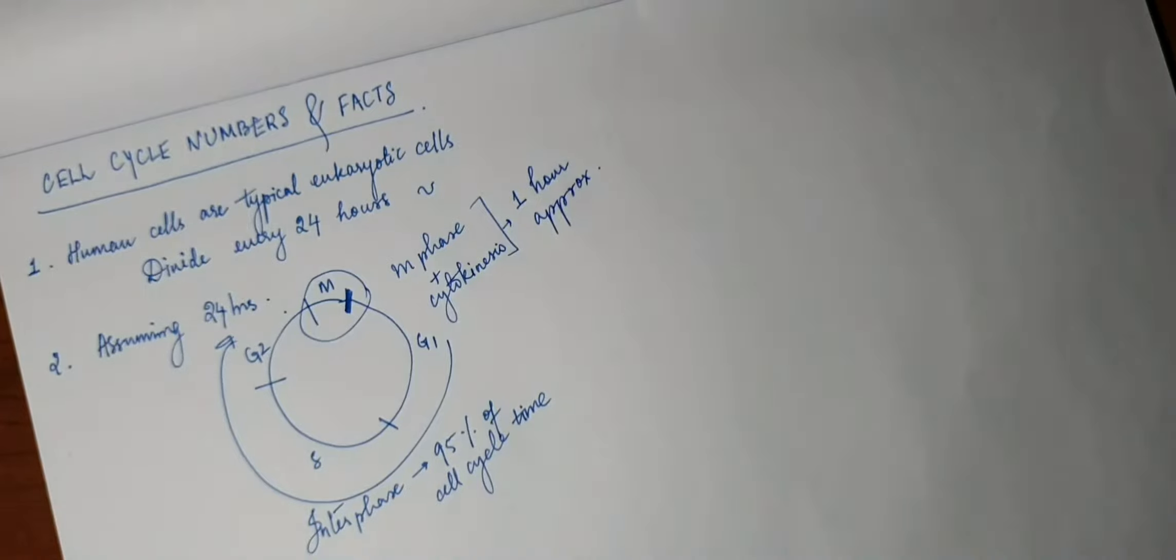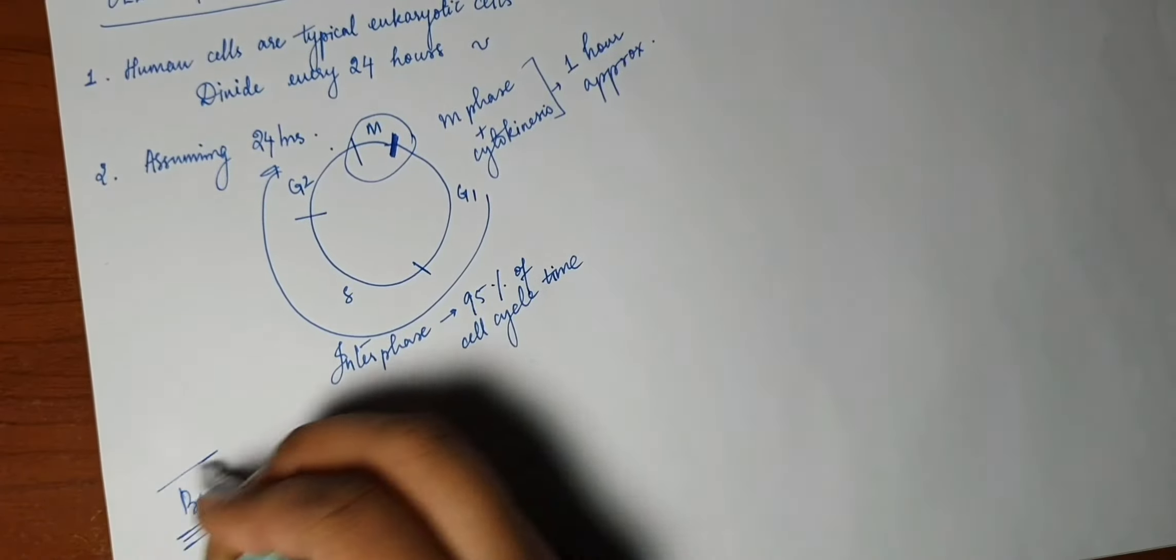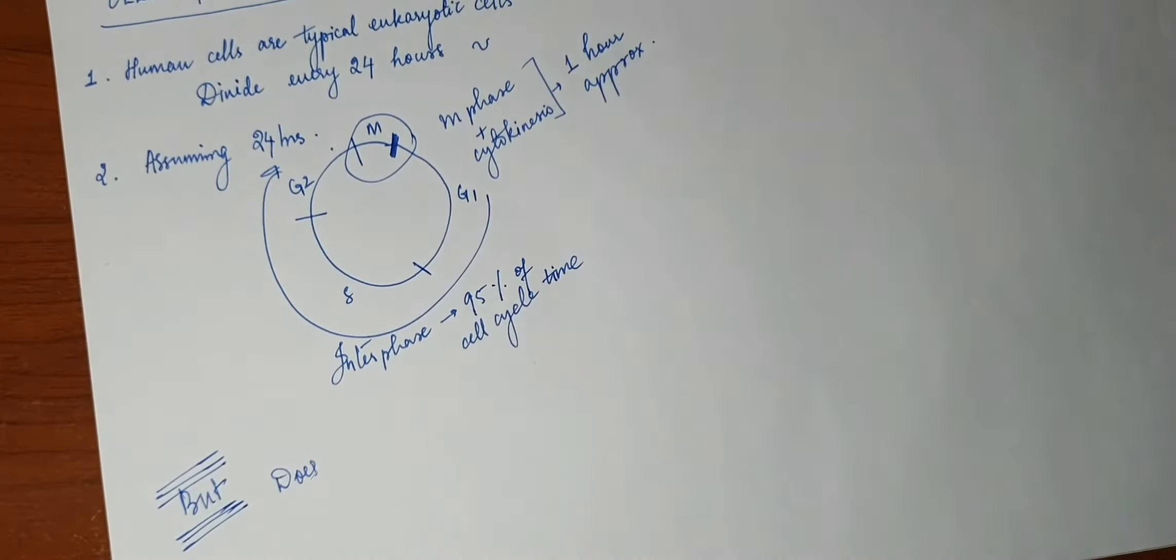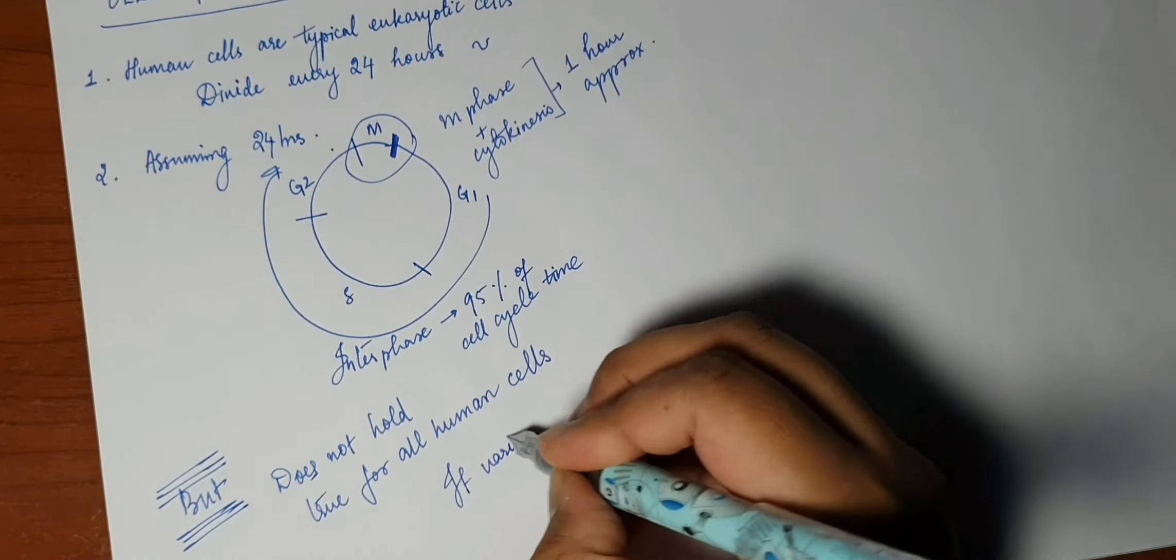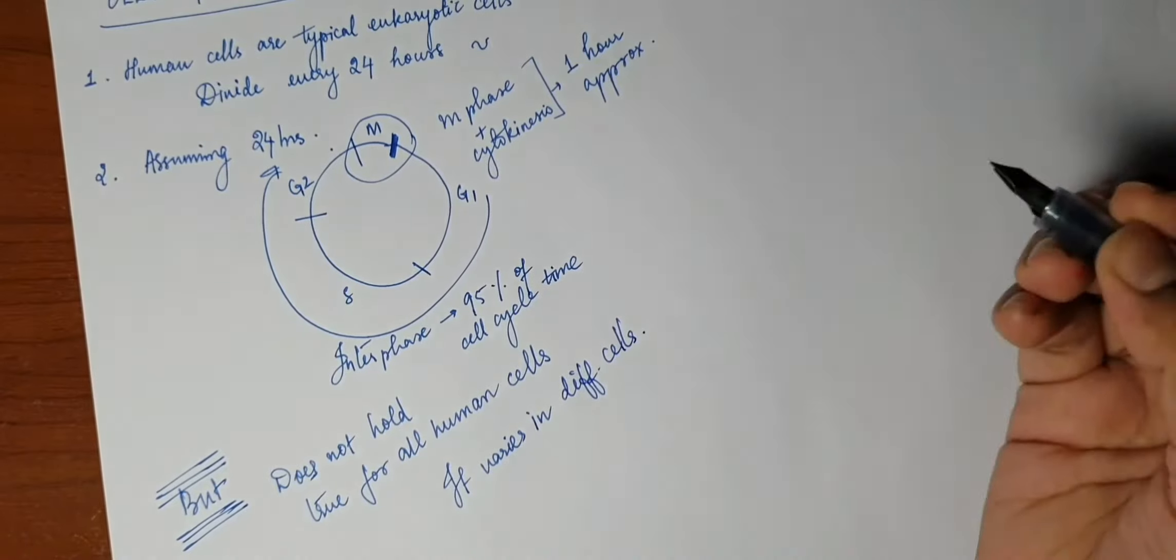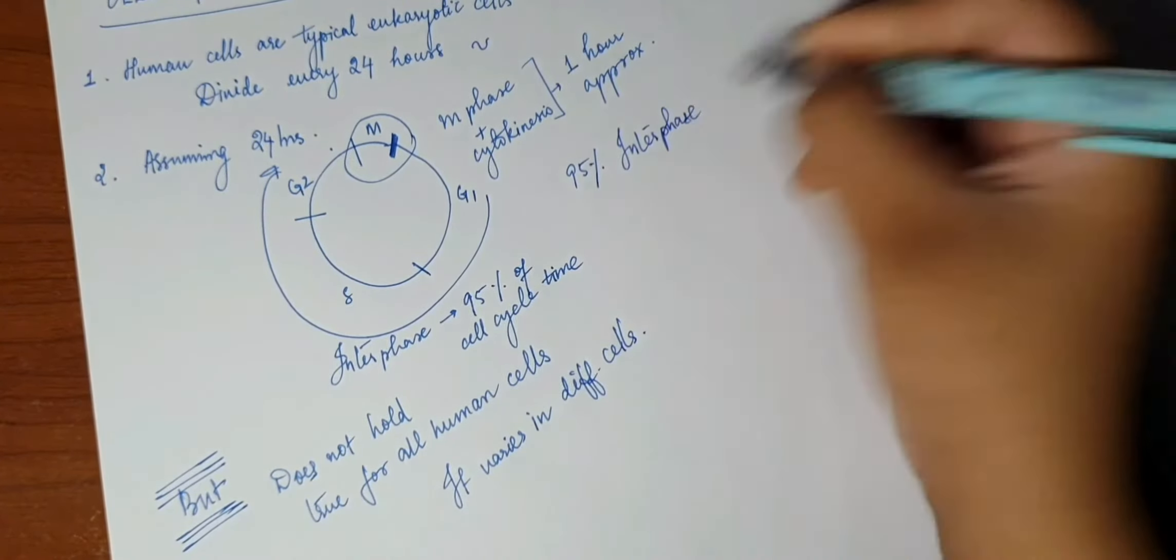And mitosis or meiosis, the M phase, along with cytokinesis, takes approximately one hour. And of course this does not hold true for all the cells. This varies with every cell, but most of the cells, 95 percent of the time is allotted to interphase.